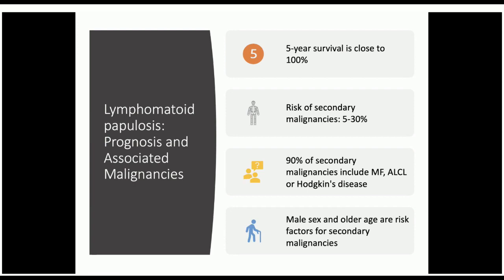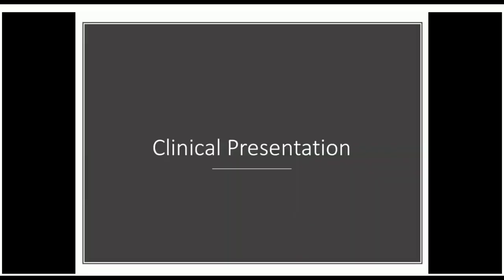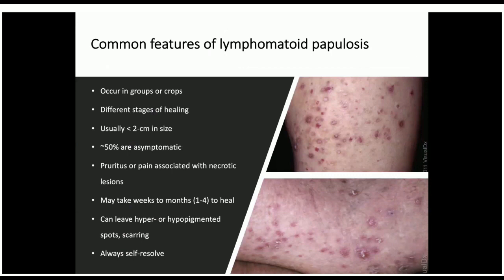Risk factors for secondary malignancies include male sex, older age, and specific histological subtypes of LYP. Clinically, lesions of lymphomatoid papulosis typically occur in groups or crops and can present in different stages of healing. There is an important size distinction: in lymphomatoid papulosis, lesions are usually less than 2 centimeters, which helps differentiate it from primary cutaneous anaplastic large cell lymphoma.